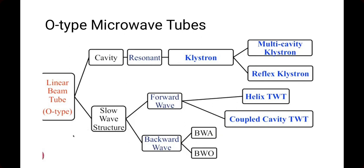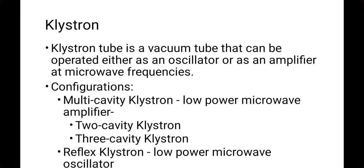You should not panic or worry by seeing this complex classification. By understanding each one of the klystron types, you will find it easy to understand all these classifications — better to go one by one in depth. So what is a klystron? Klystron is a linear beam tube that can be operated as an oscillator or as an amplifier. Multi-cavity klystron is a low power microwave amplifier, and the reflex klystron is a low power microwave oscillator.